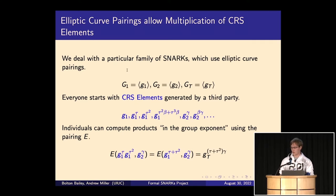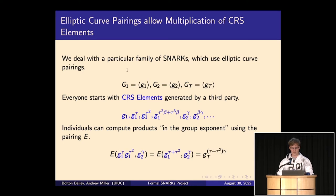How do these SNARKs work? Basically, everyone starts with a bunch of CRS elements — group elements in one of three groups: G1, powers of G1, and G2. Individuals can compute products in the group exponent using a pairing function: you take an element of the first group, an element of the second group, and multiply them into an element of the third group.